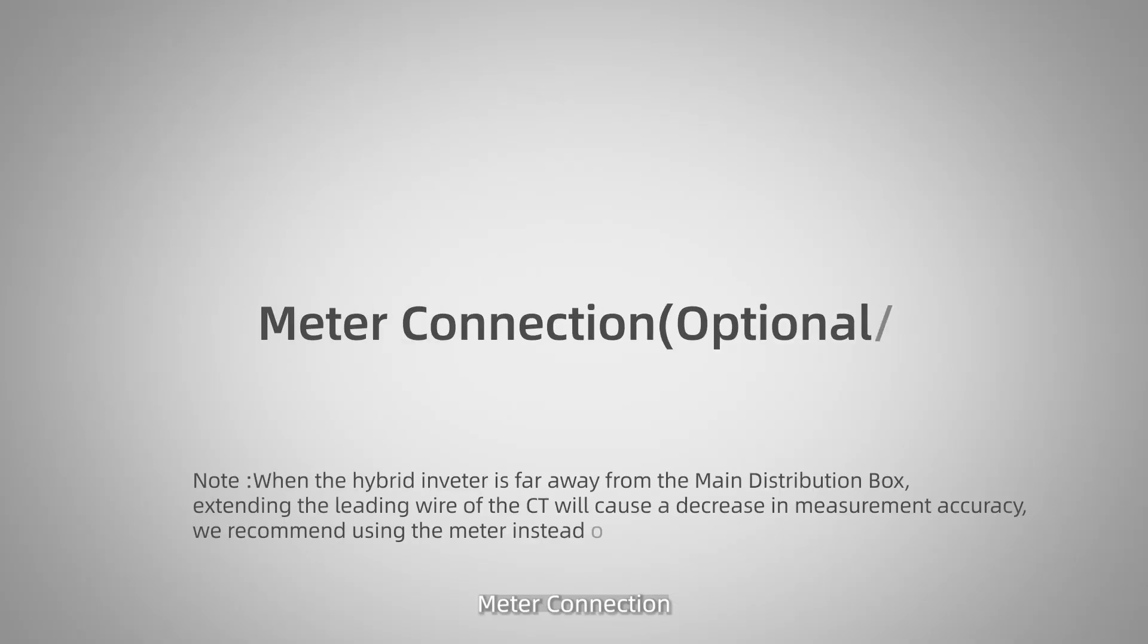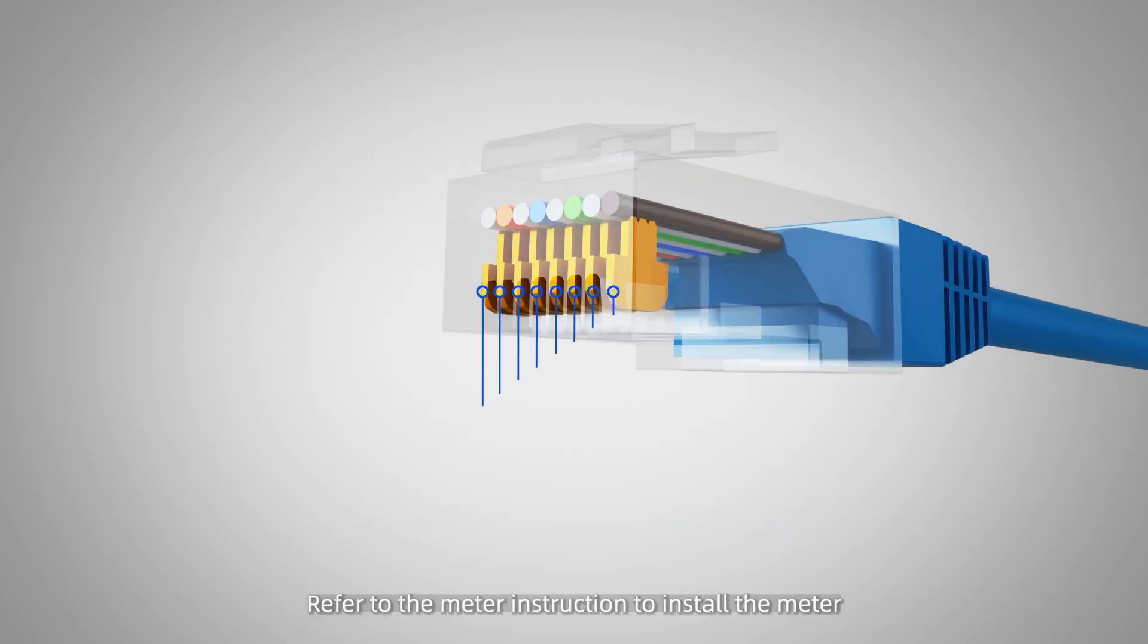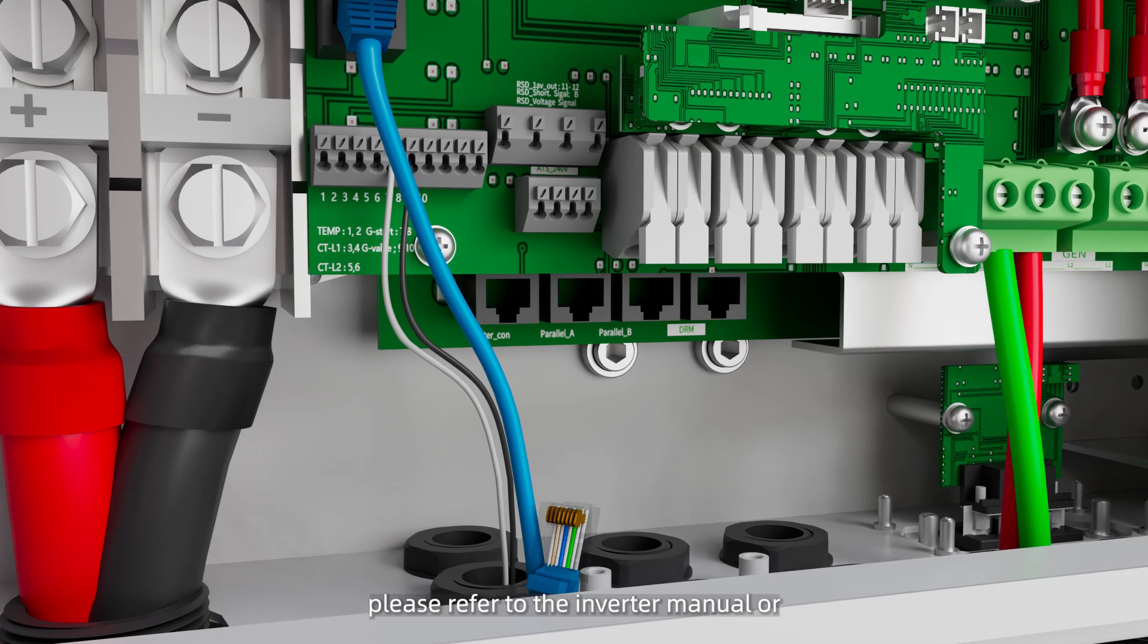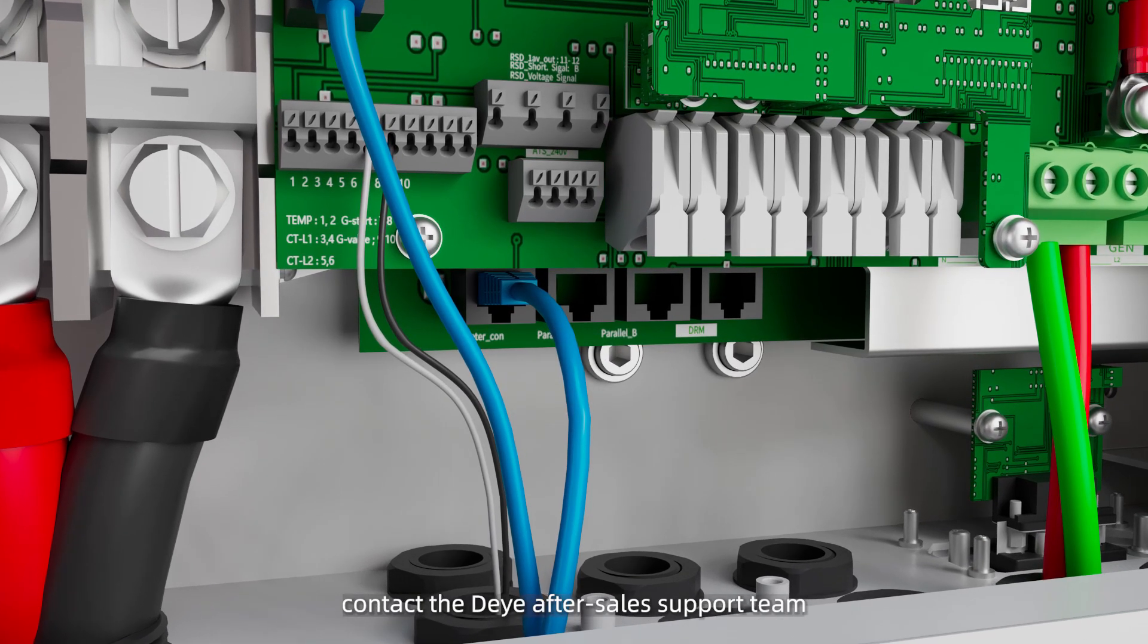Meter connection. In Australia, we usually recommend using the meter SDM120CT. Refer to the meter instruction to install the meter. When connecting the meter CT, the CT always faces towards the inverter. For other types of meters, please refer to the inverter manual or contact the Døya After Sales Support Team. Connect the RS485 port of the electricity meter to the meter port of the inverter.